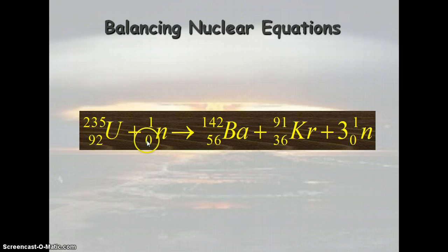The uranium atom is bombarded with the neutrons, and then it splits the uranium atom into a barium atom with 56 protons, 140 mass number, a krypton atom with 36 protons, 91 is the mass number, and three neutrons.